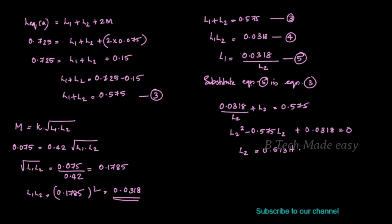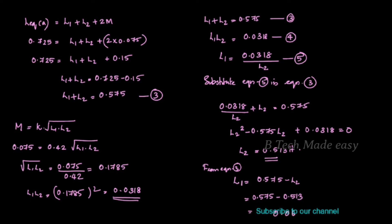With the value of L2 found, we can find L1. L1 equals 0.575 minus L2, which is 0.575 minus 0.513, giving L1 equal to 0.0625 Henry.